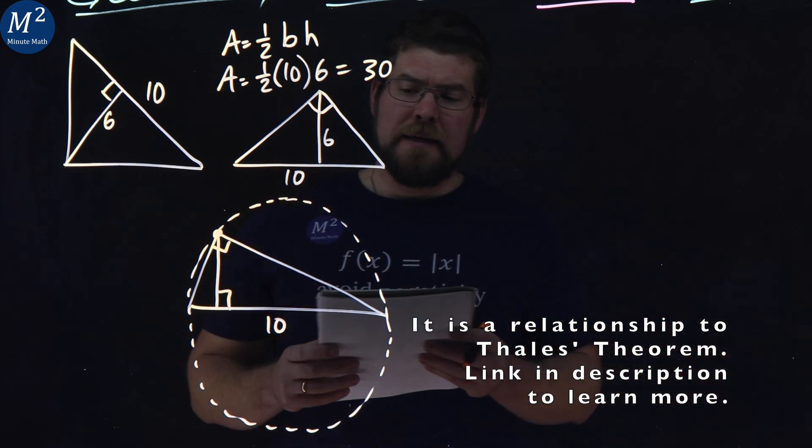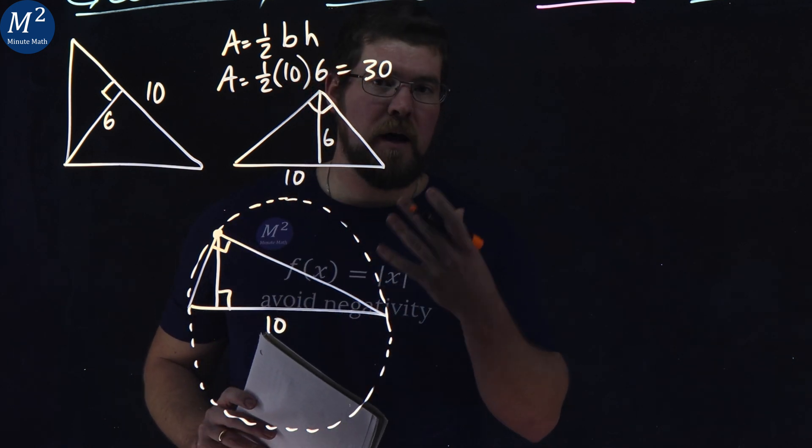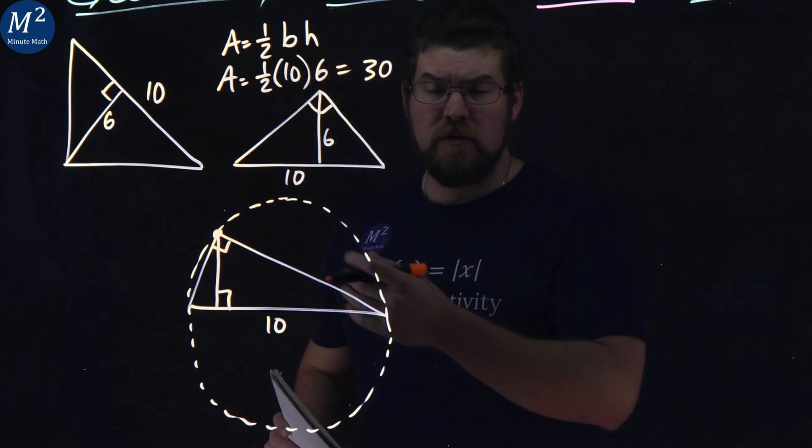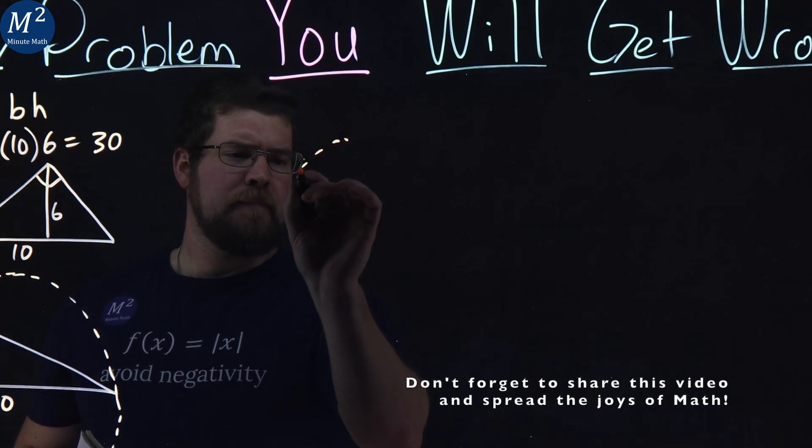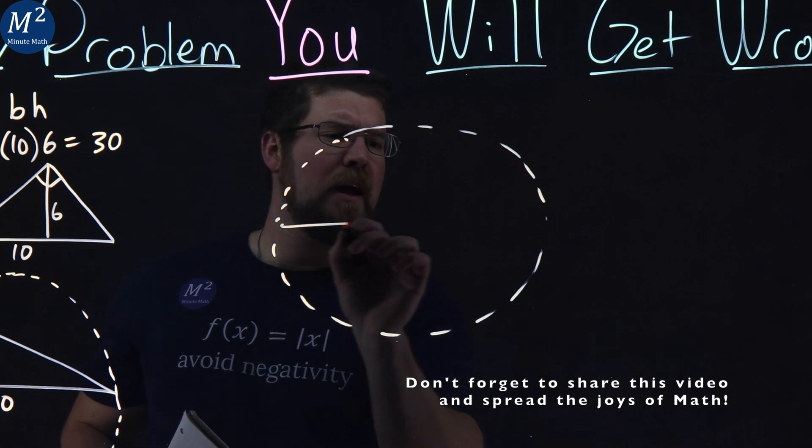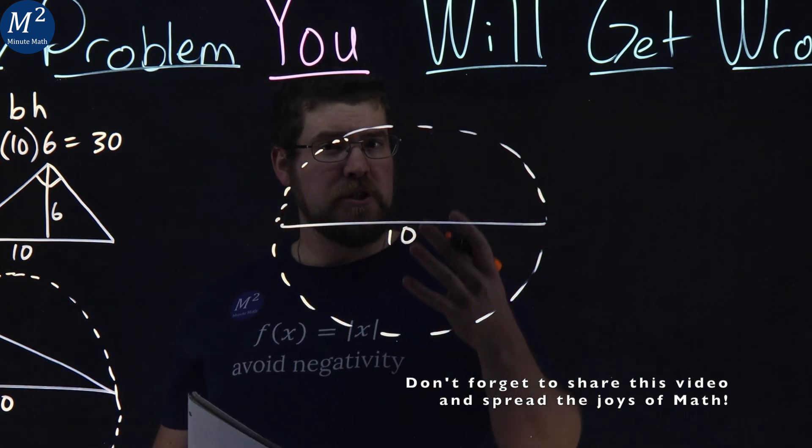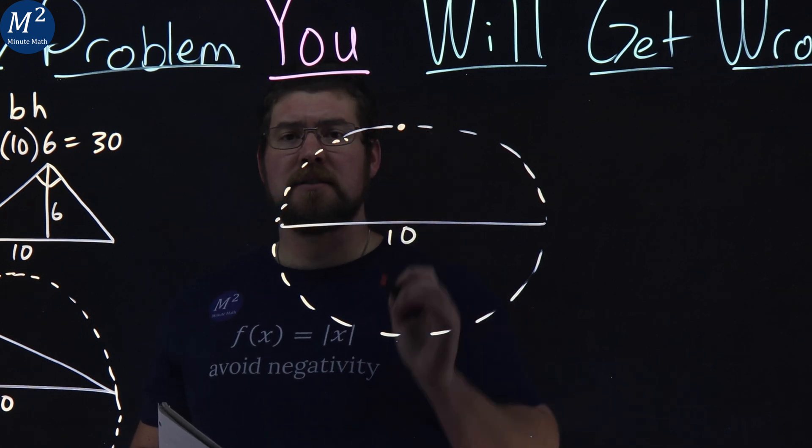So what we want to do here, this diameter is the hypotenuse, figure out what is the maximum height that the altitude can be. So if we draw the circle again, get a better visual here. We have the hypotenuse, which is 10 here. The altitude that makes it the largest will be right at the peak of that circle.